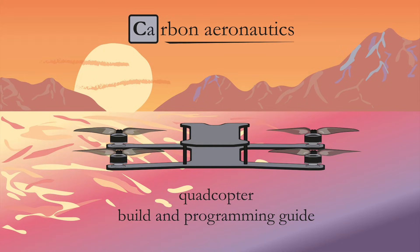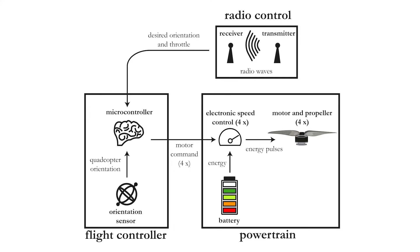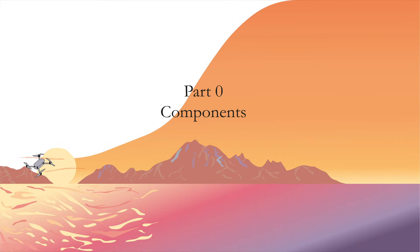This part will give you an overview of all components necessary to build your own quadcopter. In part 1 we already discussed the major components divided into the radio control system, the flight control system, the powertrain, and the quadcopter frame. Now we will go into more detail. This quadcopter consists of 38 unique components, and in order to test everything you will need 7 additional components.